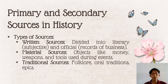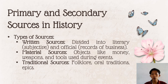The types of sources include written sources, material sources, and traditional sources. Written sources are divided into literary and official. Literary involves the writer's subjectivity — for example, during the Spanish period, a Spanish writer would favor Spain and be biased against the Philippines. Official sources are records produced when transacting business.